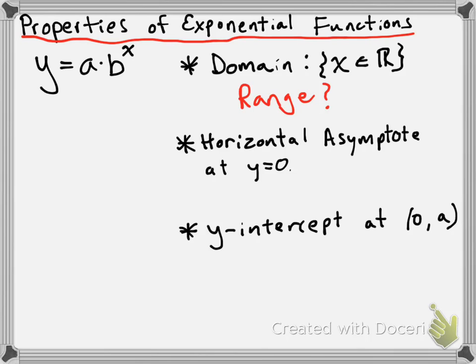But before that, let's talk about why the y-intercept is going to be at a value of a. The equation of an exponential function is y equals a times b to the power of x. A y-intercept occurs when x equals 0, so we substitute 0 in for x and get y equals a times b to the power of 0. Since anything to the power of 0 equals 1, that gives us y equals a times 1, which is just a. That's why we get a y-intercept at (0, a).